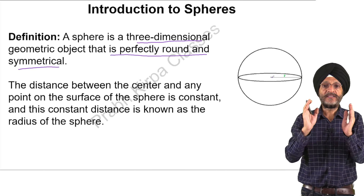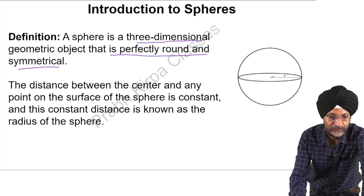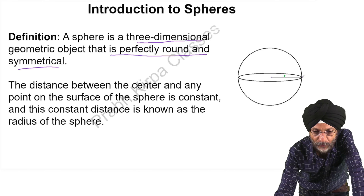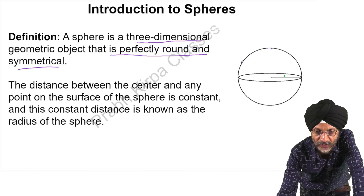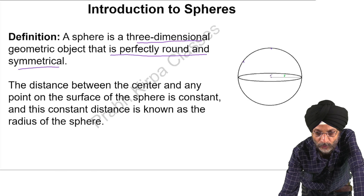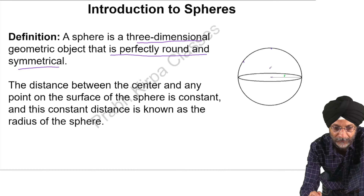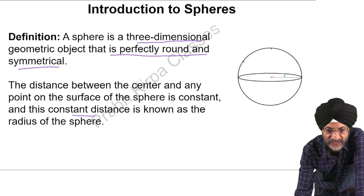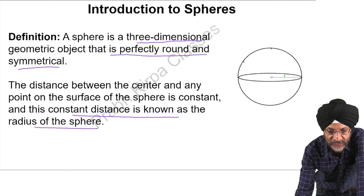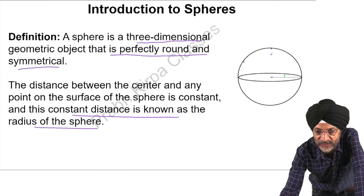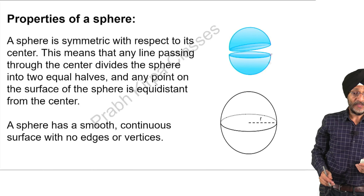First of all, we will understand the definition of sphere. A sphere is a three-dimensional geometric object that is perfectly round and symmetrical. In this picture, you can see that it is perfectly round and symmetrical. The example of a sphere is a basketball or tennis ball. We can visualize the three-dimensional nature of the sphere as it extends outward from the centre and fills the space in all directions.